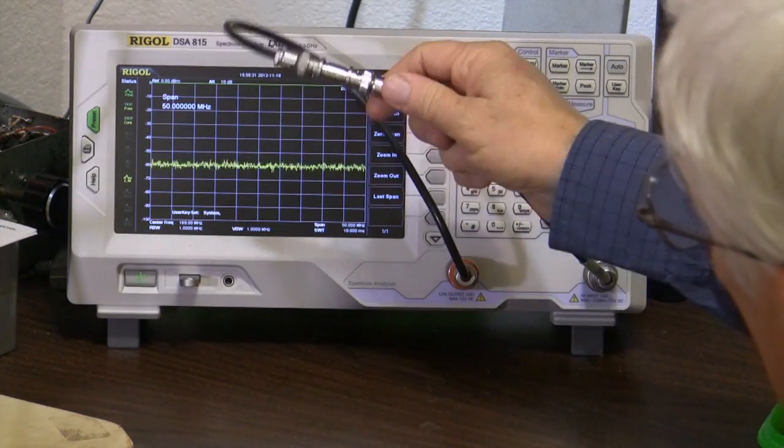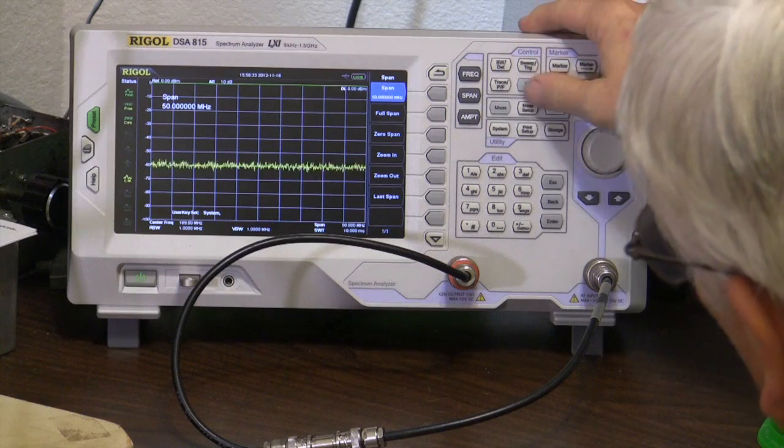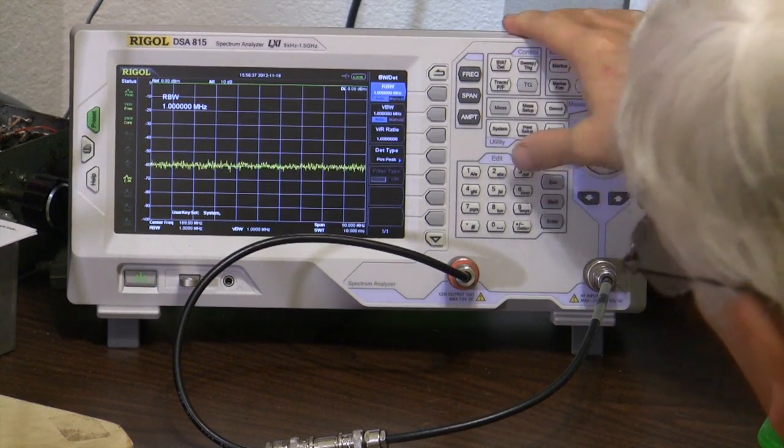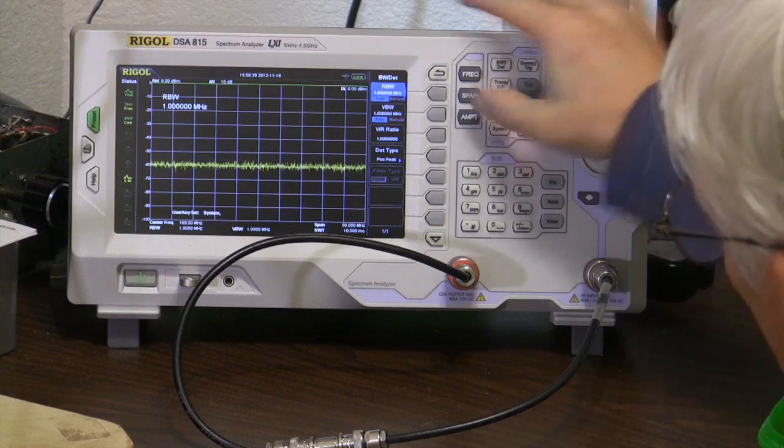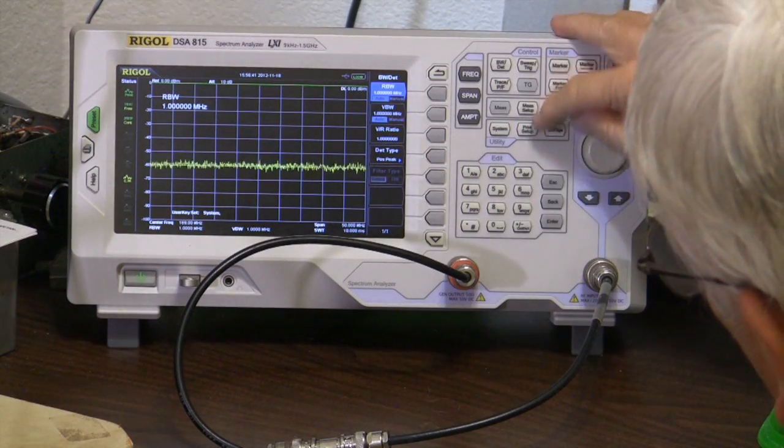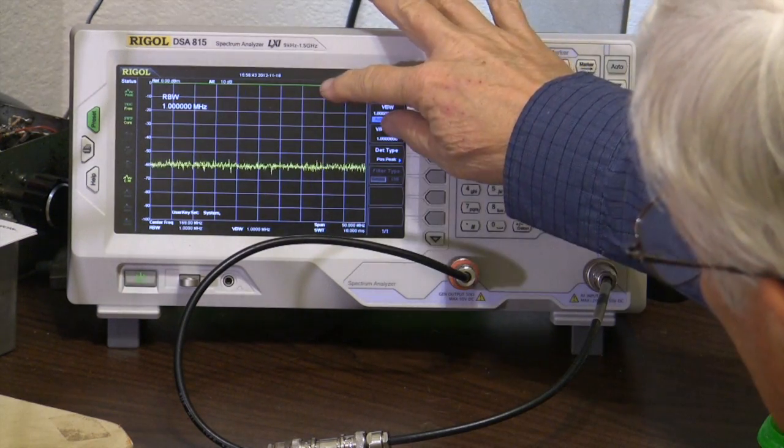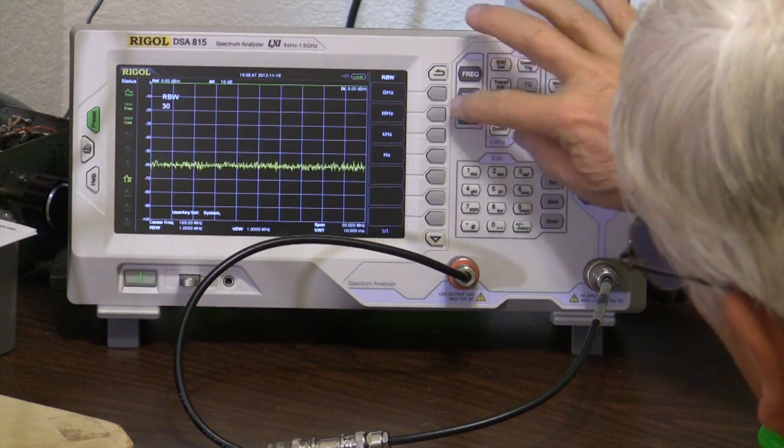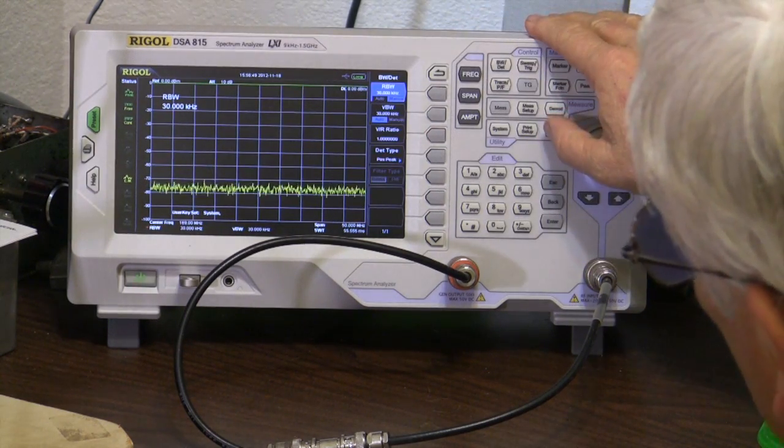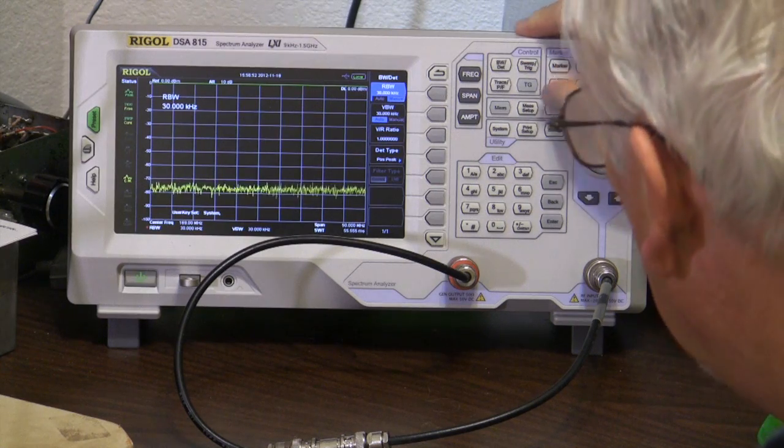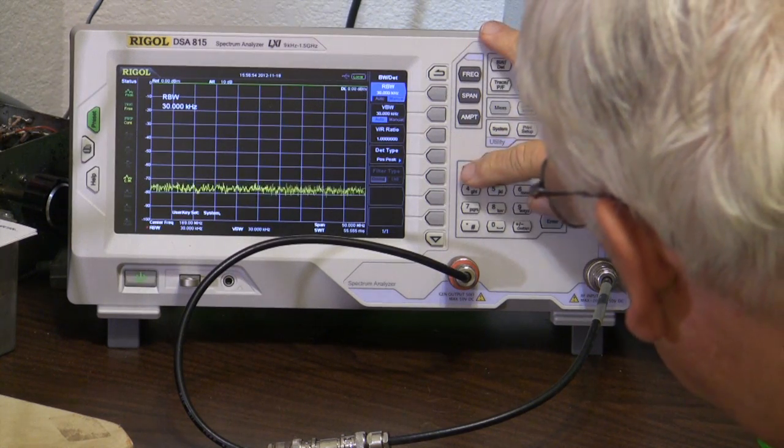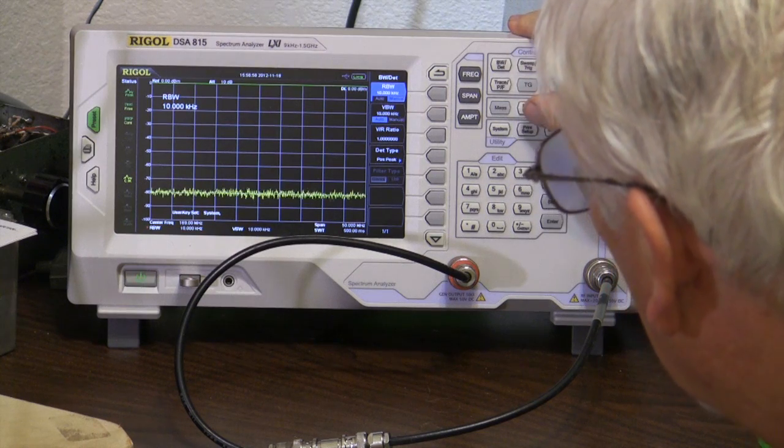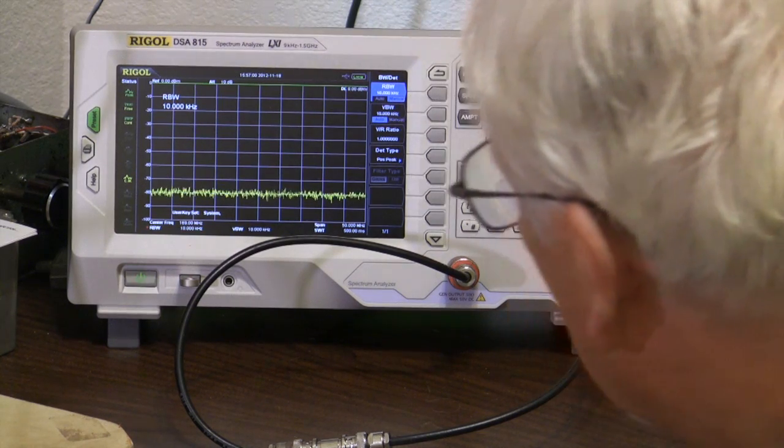Time has possibly changed the response slightly, but we'll see what happens and see what the thing is actually doing today. So we have our connection here. So we'll put on the tracking generator. Well, first, let's put the bandwidth down at something more reasonable to get enough dynamic range here. We'll go to 30 kilohertz. I guess it's down to 75. Let's go to 10 kilohertz.